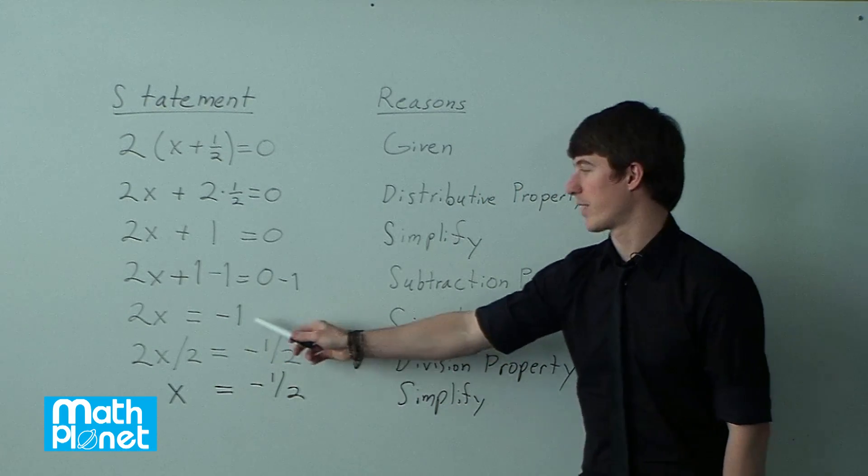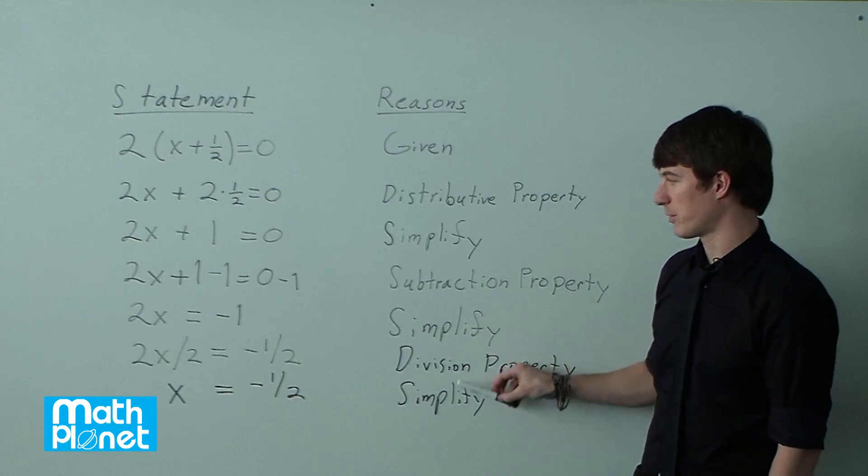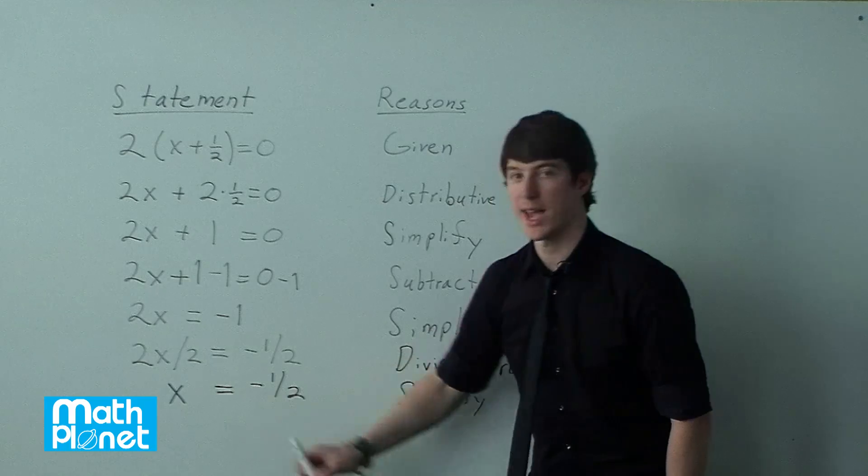2x divided by 2. And then we have to do divided by 2 on the other side. Negative 1 divided by 2. Then we simplify. 2x divided by 2 is just x.